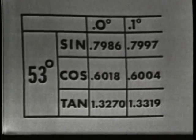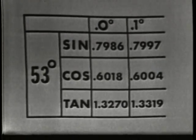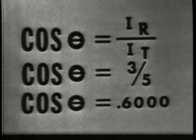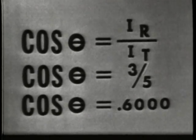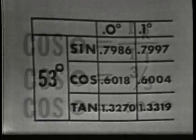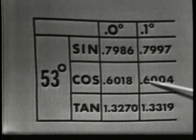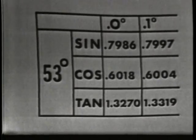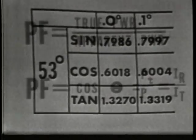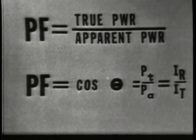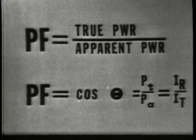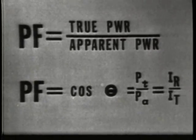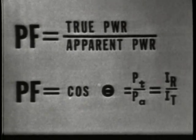Other trig functions may sometimes be more convenient. The cosine is often used because it also equals the power factor. Using the cosine of theta: cosine equals IR over IT, or 3 over 5, which is 0.6. From the trig tables, the phase angle for a cosine of 0.6 — the nearest value being 0.6004 — is again 53.1 degrees. The advantage of using the cosine is that the cosine of angle theta equals the power factor, which is the ratio of true power to apparent power.